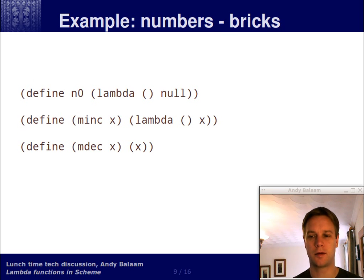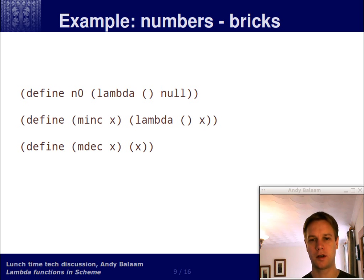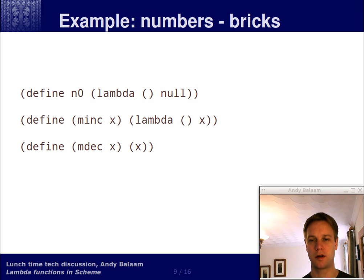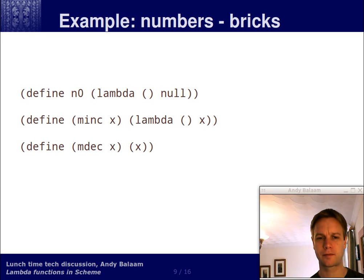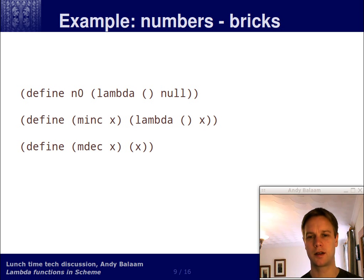Let's move on to another example. If you thought that one was hard to understand, let's try this one. Let's define a symbol called n0. What that is, is the result of this lambda procedure. Lambda is defining a function which takes no arguments — that's why there's a double bracket there — and the return value of this procedure is null. So n0 is a procedure taking no arguments, returning null. Now let's define a procedure called mink, which takes in one argument called x. What that does is return a function taking no arguments, which returns x when you call it.